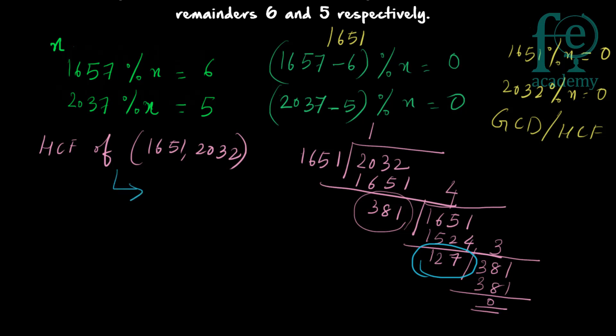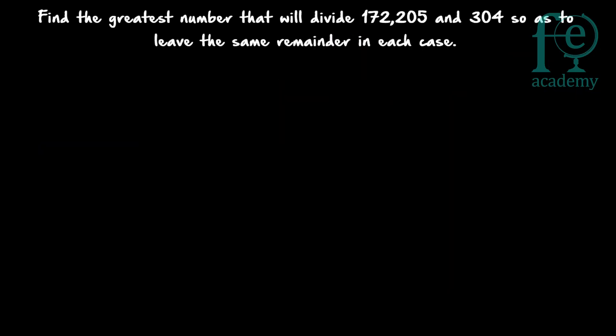The highest common factor of 1651 and 2032 is 127. So 127 is your answer. When you divide 1657 by 127 you get remainder 6, and when you divide 2037 by 127 you get remainder 5.